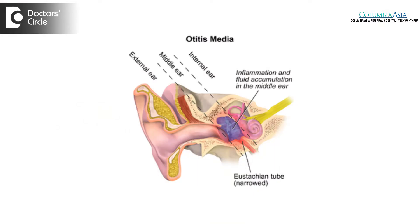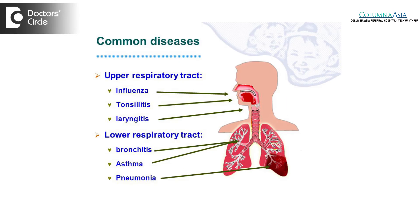Otitis media means infection of the middle ear. Why is it common in children? Children, as we all know, are prone to catching upper respiratory tract infections. Most children in the age group of between two and seven years is the time when they start mingling with society, they start going to play school, they start seeing more people, and come in contact with different types of people from different socio-economic backgrounds.